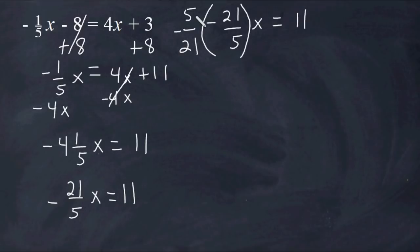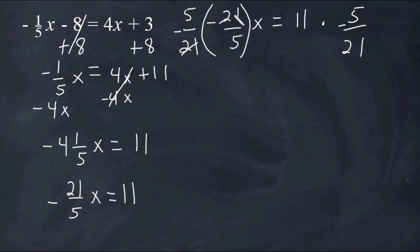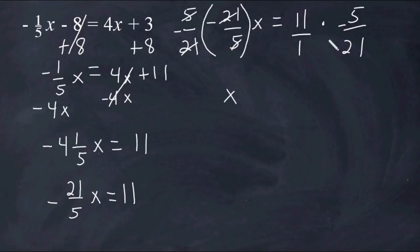Because we're multiplying this side by negative 5 over 21, we have to multiply 11 on this side by negative 5 over 21 as well. Everything on this side cancels out, and because we were multiplying two negatives, that leaves us with positive 1. So on the left-hand side we have positive 1x, or just x. On the right side, we multiply 11 by negative 5 over 21. There's nothing to cancel, so we multiply straight across: 11 times negative 5 is negative 55, and the denominator is 21.